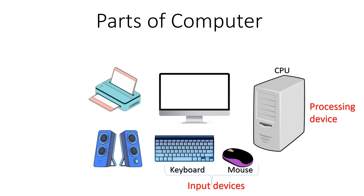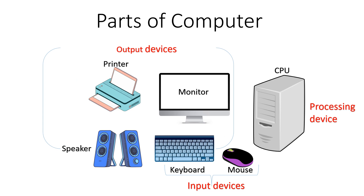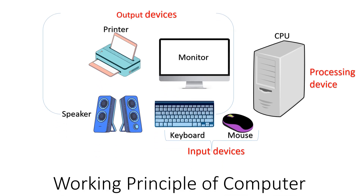After processing, the results need to be displayed, which is shown on the monitor. If we want to print the output information we can use a printer, and we have a speaker for audio output. Monitor, printer, and speaker are the output devices of our computer system. So the important parts are: input devices — keyboard and mouse; processing device — CPU; and output devices — monitor, printer, and speaker.